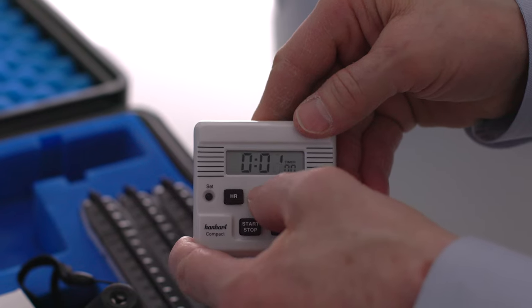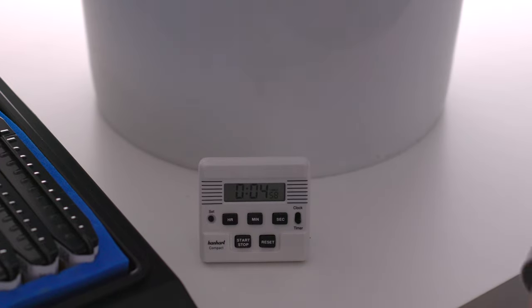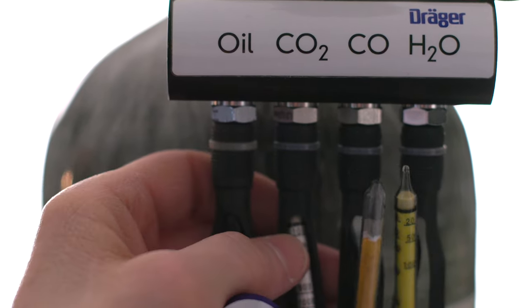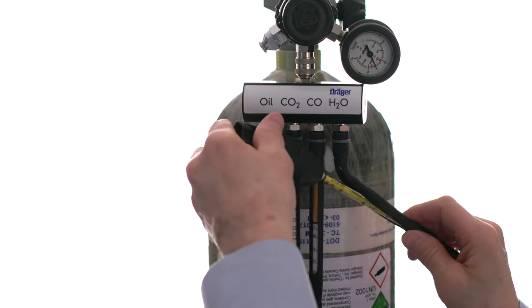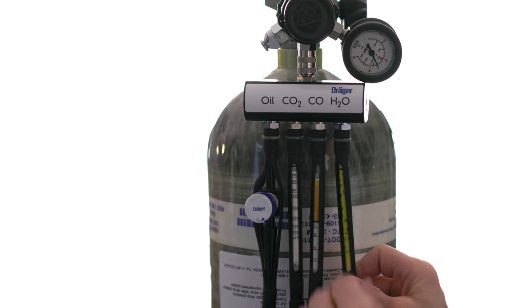Set the timer to five minutes. When you're ready to begin the test, start the timer and immediately connect the oil impactor, carbon dioxide, and carbon monoxide tubes to the inlet of the holder. Then use the tube opener to remove the tip from the water vapor tube and connect to the inlet of the holder.